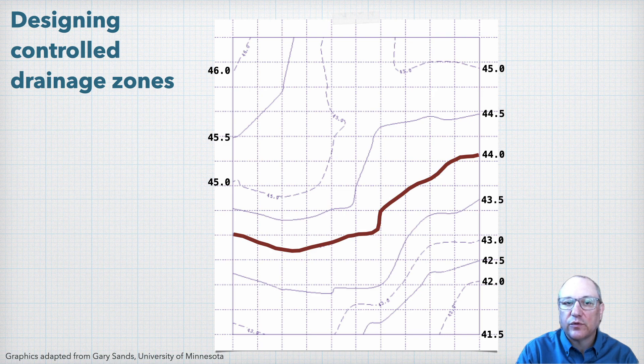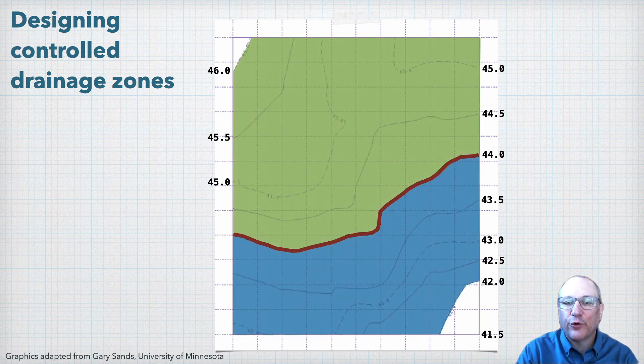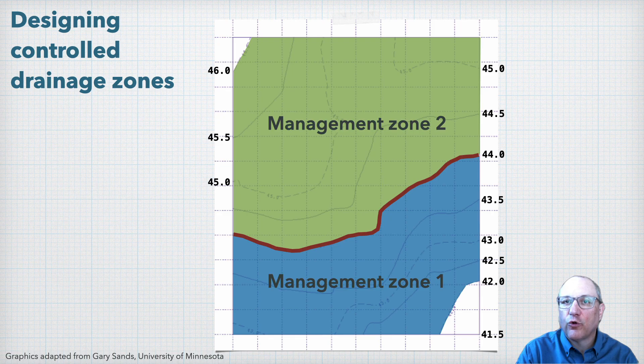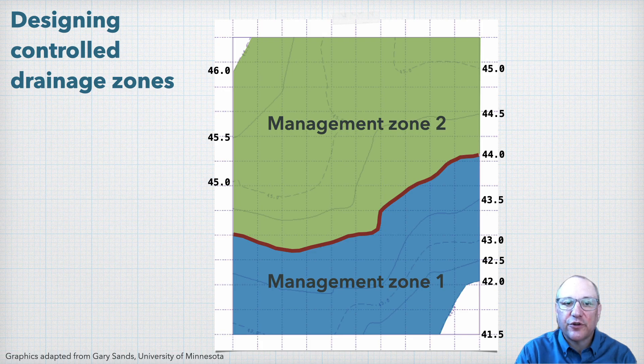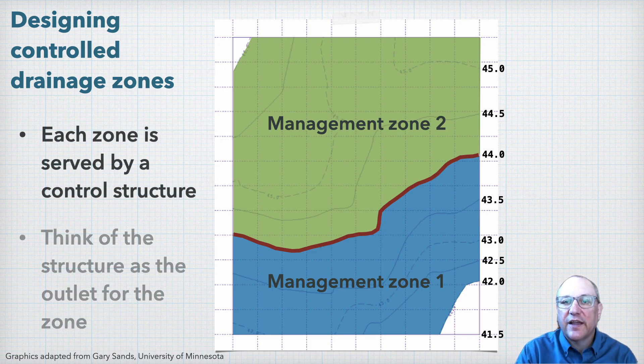This gives us two management zones, one from 42 to 44 feet, and then another from 44 to 46 feet. Each zone will then be managed by its own control structure, and then we can think of that control structure as the outlet for that zone.